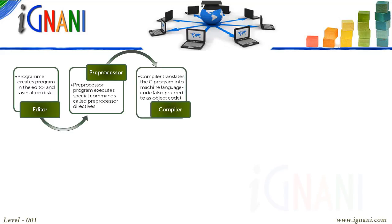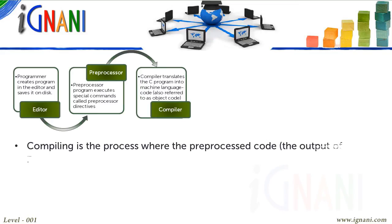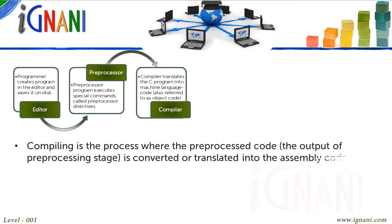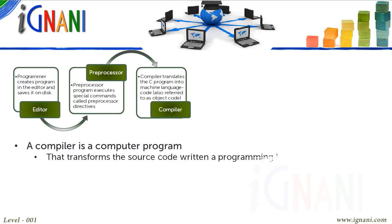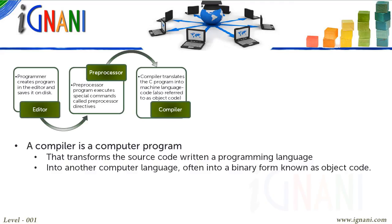Compiling: This is the process where the pre-processed code — the output of the pre-processing stage — is converted or translated into assembly code by the C compiler. A compiler is a computer program that transforms source code written in a programming language into another computer language, often into a binary form known as Object Code.